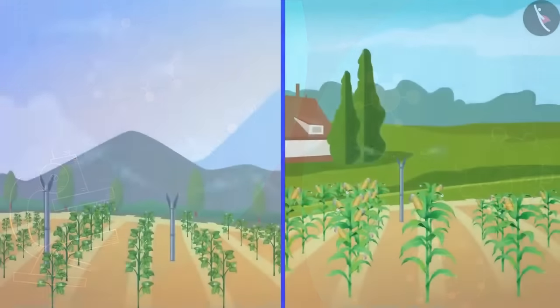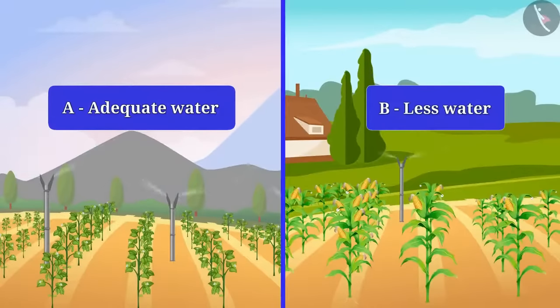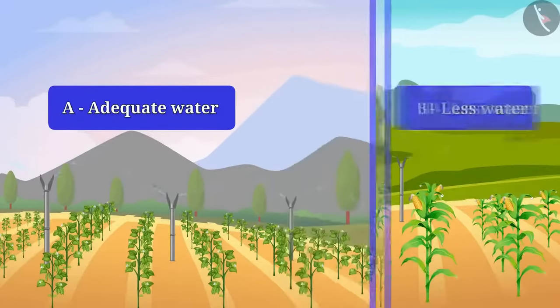Friends, there are two lands, A and B here. Plants in land A are adequately watered while in land B, plants are not adequately watered. In which land do you think will plants grow properly?